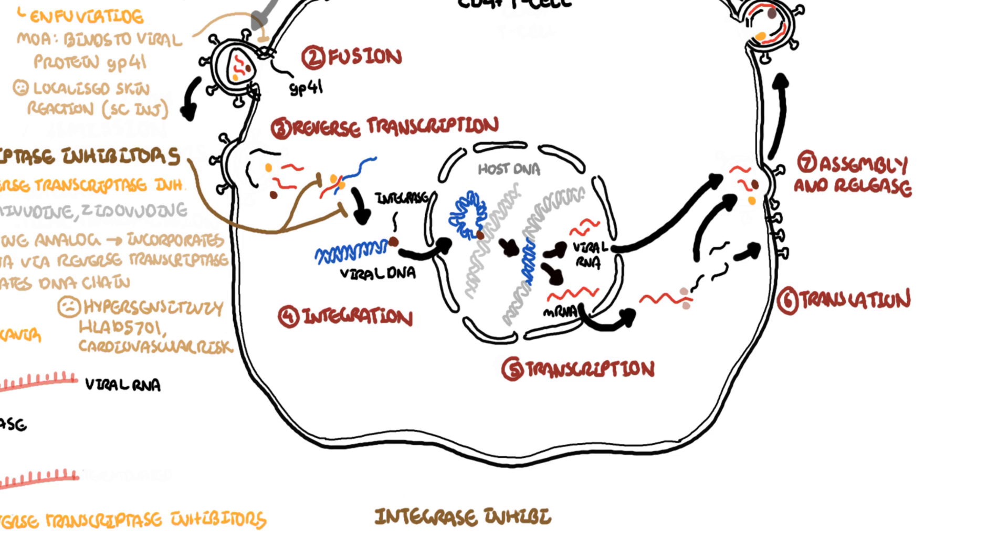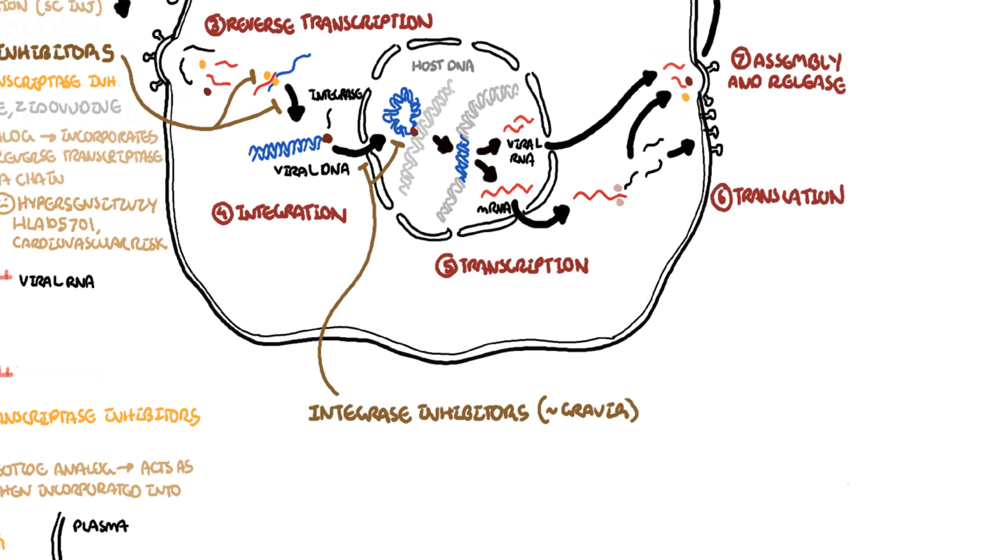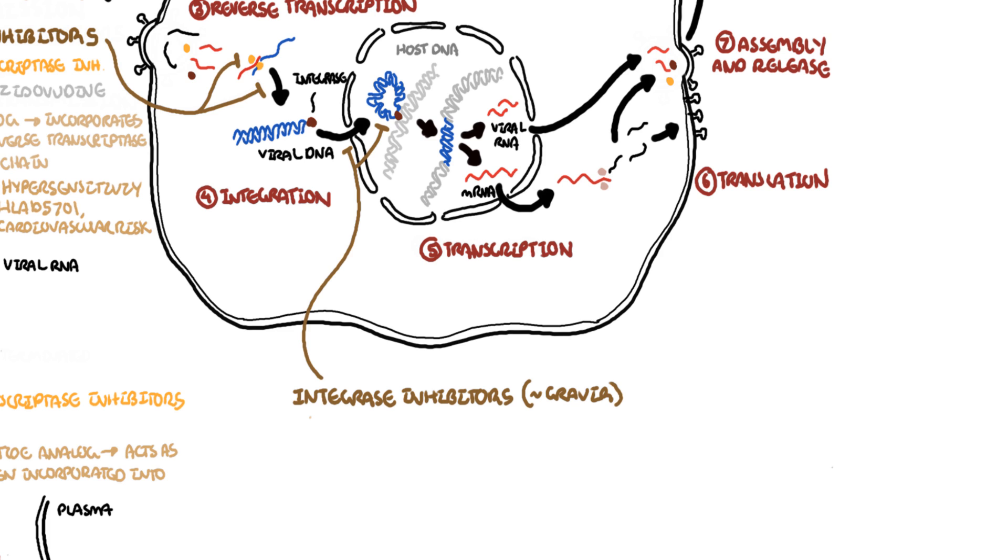Another class of antiretrovirals are the integrase inhibitors, which block the enzyme here. HIV integrase inhibitors usually end with gravir and have been developed to inhibit the HIV enzyme integrase, preventing the transfer and insertion of viral DNA to the host cell DNA. Examples of integrase inhibitors include raltegravir and doltegravir. The main side effect of raltegravir is myopathy as well as an elevation in creatinine and doltegravir causes an elevation in creatinine.